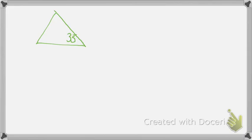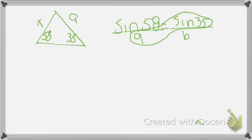The first thing I did was I drew my triangle. And then I wrote sine 58 equals sine 35 over B.